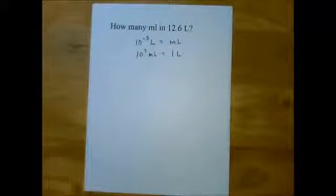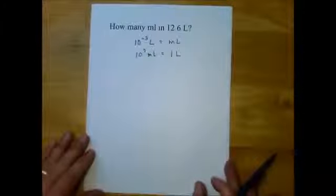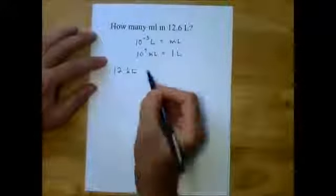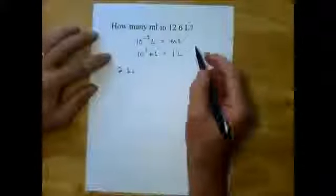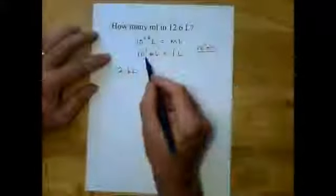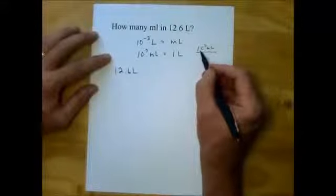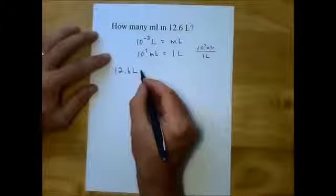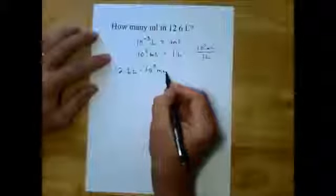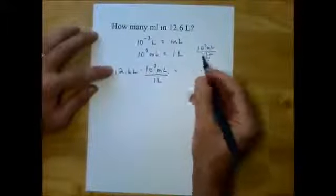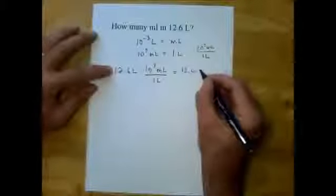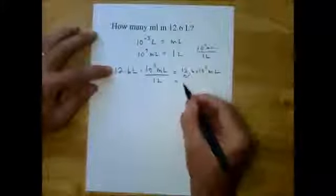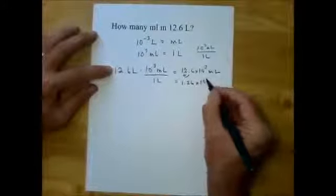I generally prefer the ones with a positive exponent just out of personal preference, and that's the one I remember. So we want to go from 12.6 liters to milliliters. We pick the conversion factor that will work — we write it with what we want on top and what we want to cancel on the bottom. That gives us ten to the third milliliters per liter, which equals 12.6 times ten to the third milliliters. In correct scientific notation, that's 1.26 times ten to the fourth milliliters.